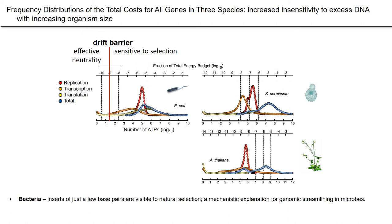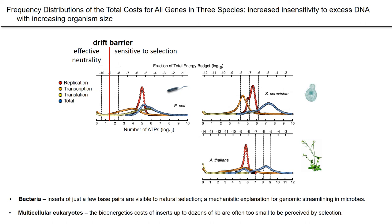Moving to eukaryotes of increasing cell size, three things happen: the absolute cost of a gene goes up because of all the embellishments discussed before, but the total cost of a cell goes up even faster. This results in the relative cost of genes being lower than found in bacteria. The drift barrier moves to the right and as a consequence the distribution of cost of genes spills across the drift barrier. This tells us that in eukaryotes, particularly multicellular eukaryotes, the relative bioenergetic costs of inserts even up to dozens of kilobases are often too small to be perceived by selection.